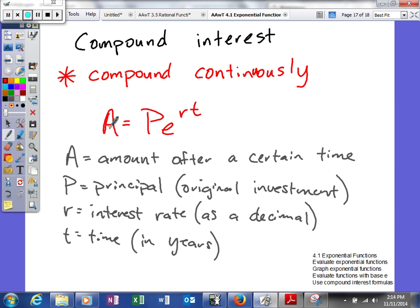The formula is a little bit different. It's A equals Pe to the rt power. E is that natural base that we have been talking about, where A is the amount of money after a certain time, P is our principal or original investment, r is our interest rate as a decimal, and t is our time in years.